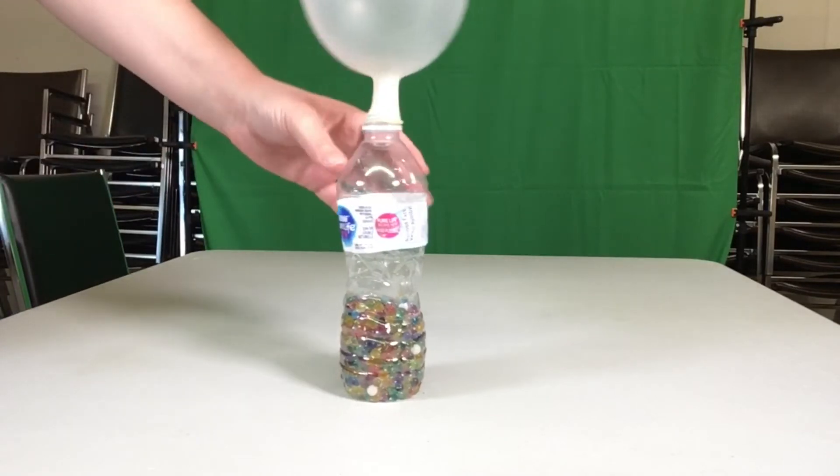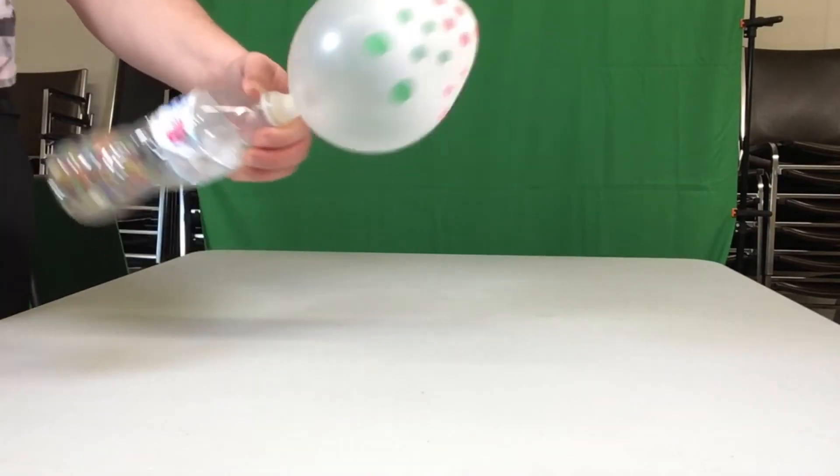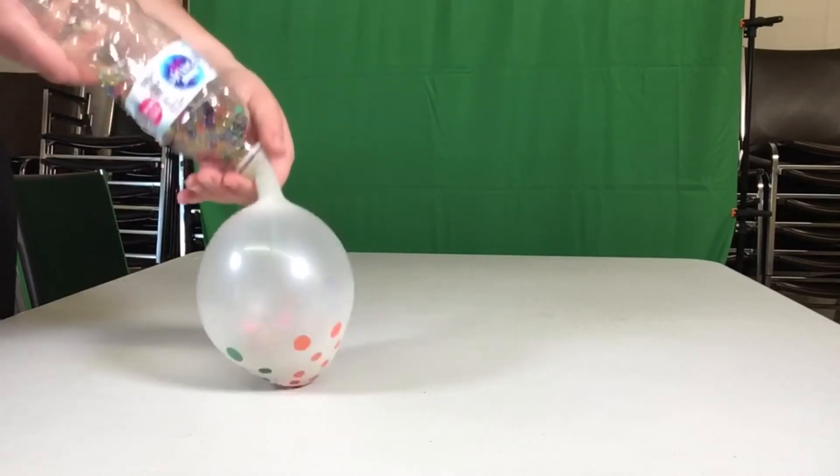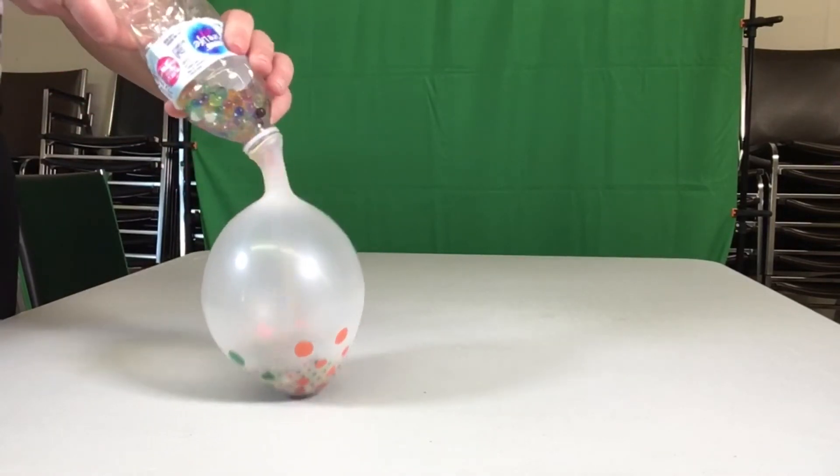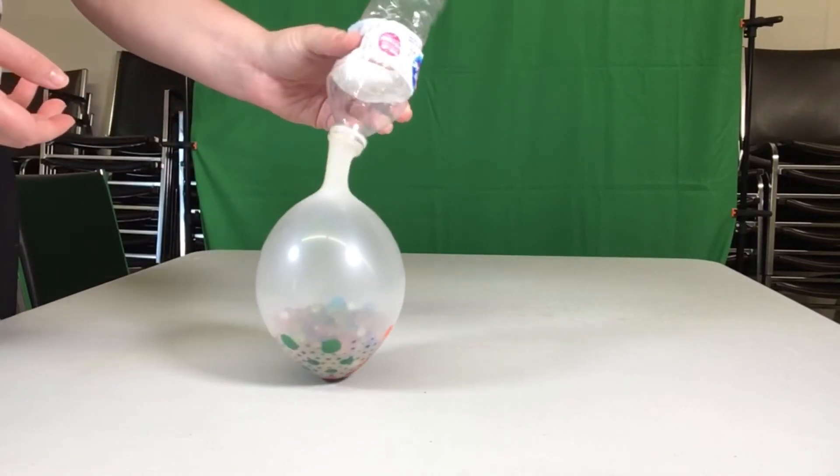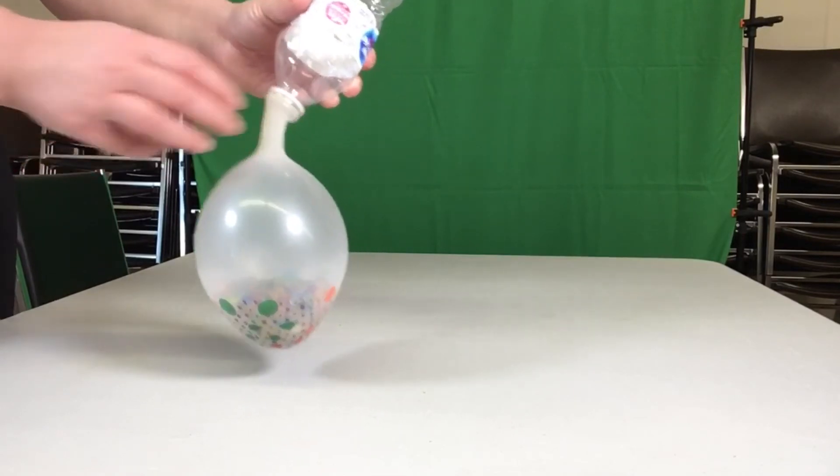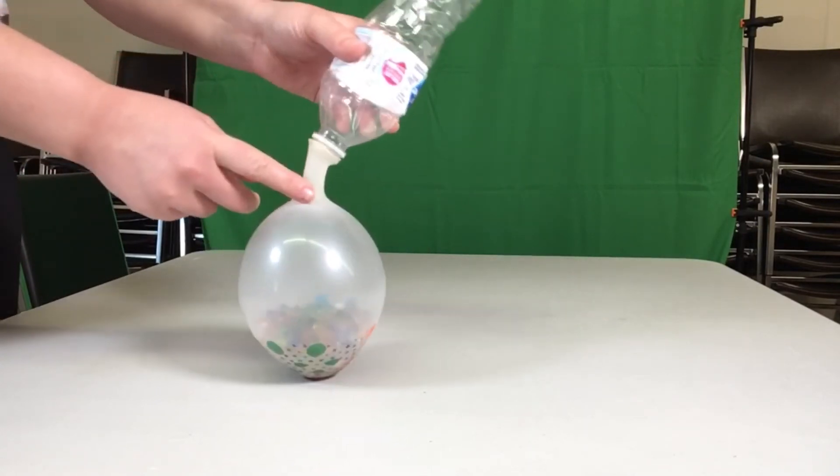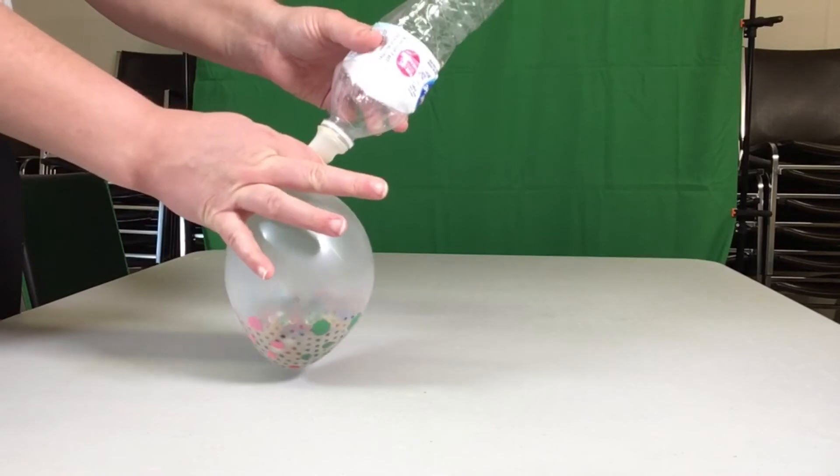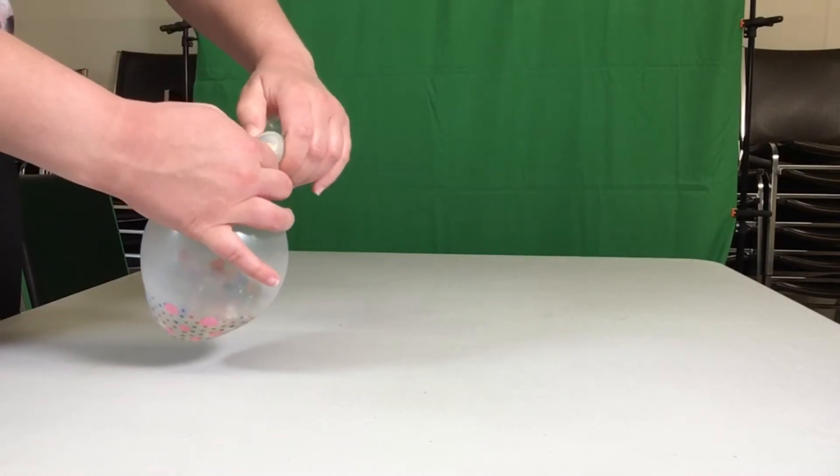Once your balloon is securely on the water bottle tip it all over and pour in your water beads into the balloon. Once all the water beads are inside the balloon pinch the neck of the balloon and pull it off the water bottle.